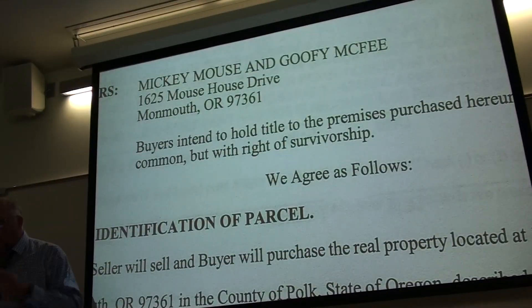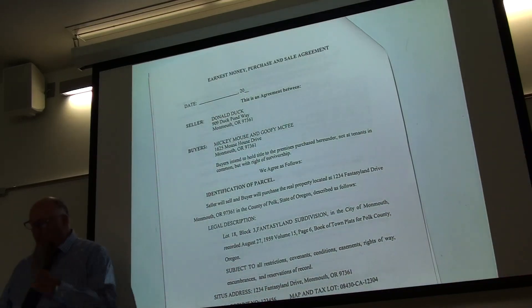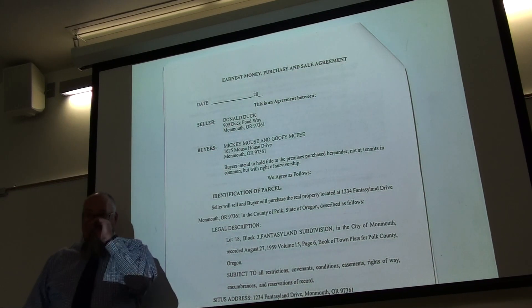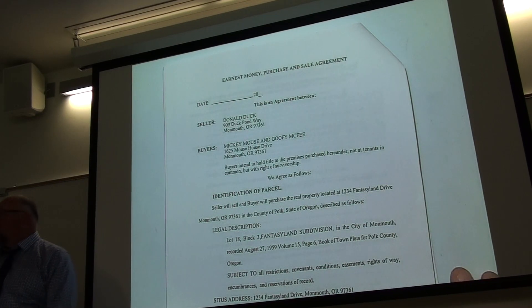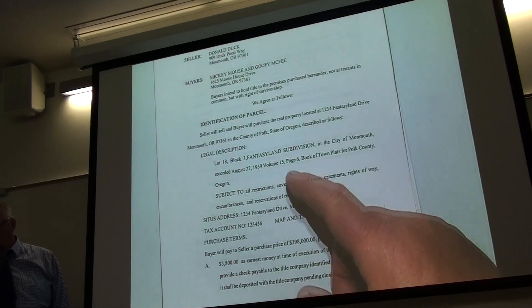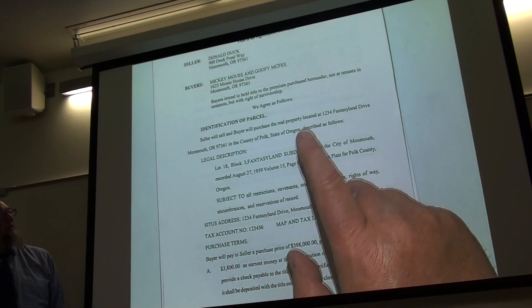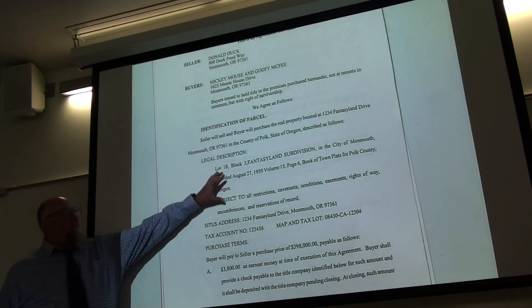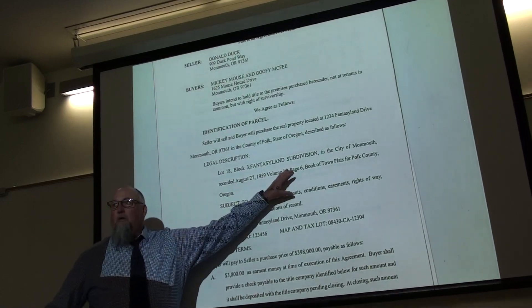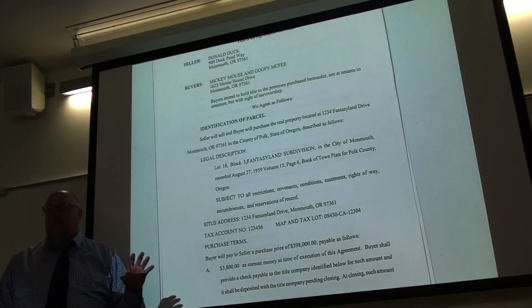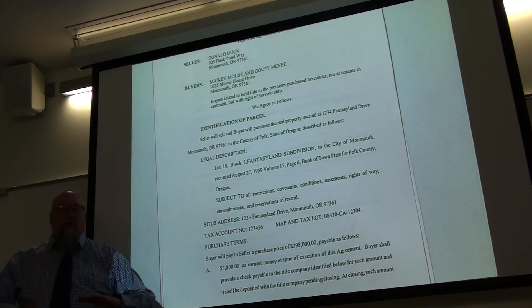Here's an example of the earnest money purchase and sale agreement — this is what you use to start a sale transaction. It identifies the buyer and seller, who will sell and purchase the property at a given address. You'll include the legal description — the survey description on record with the county that identifies the parcel. The address itself may not even be relevant, especially for farmland, so the legal description is critical. The title company will verify that legal description as part of the title report.